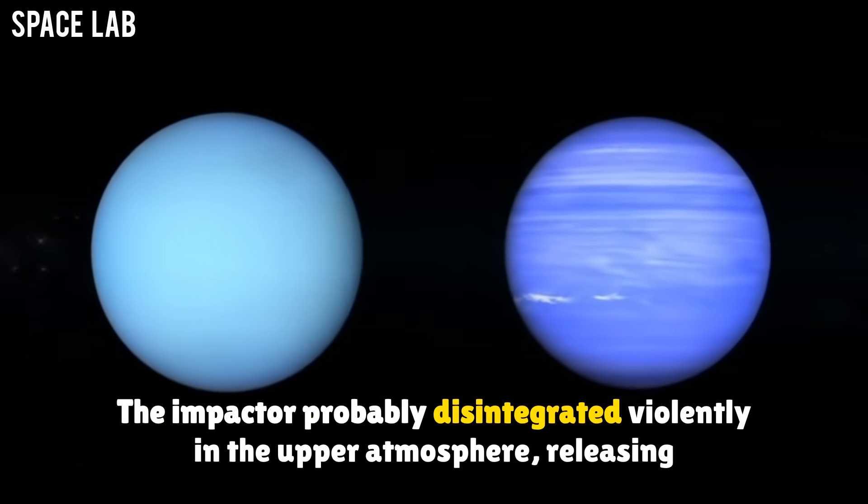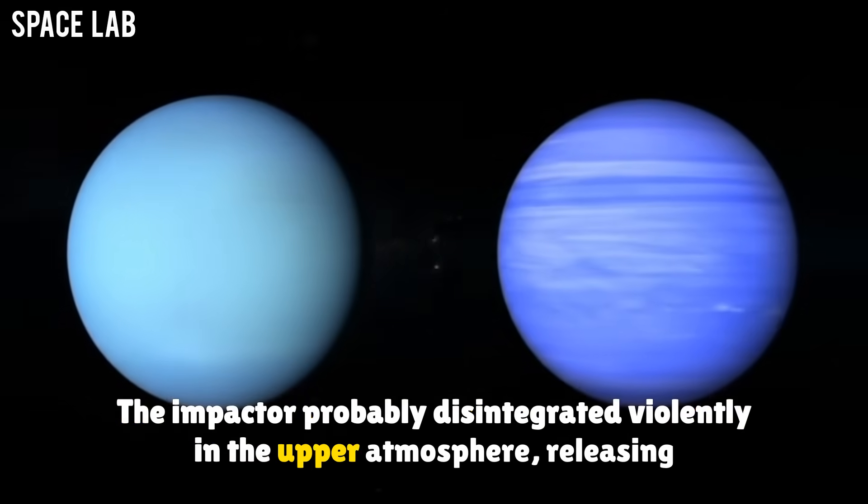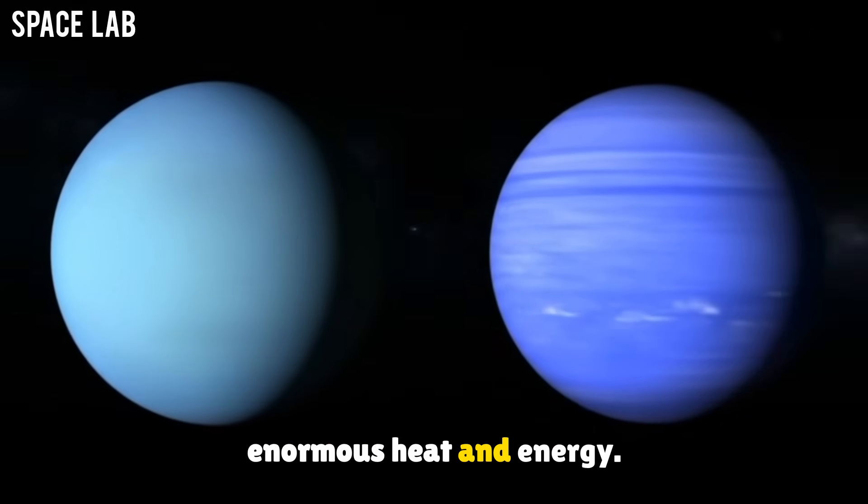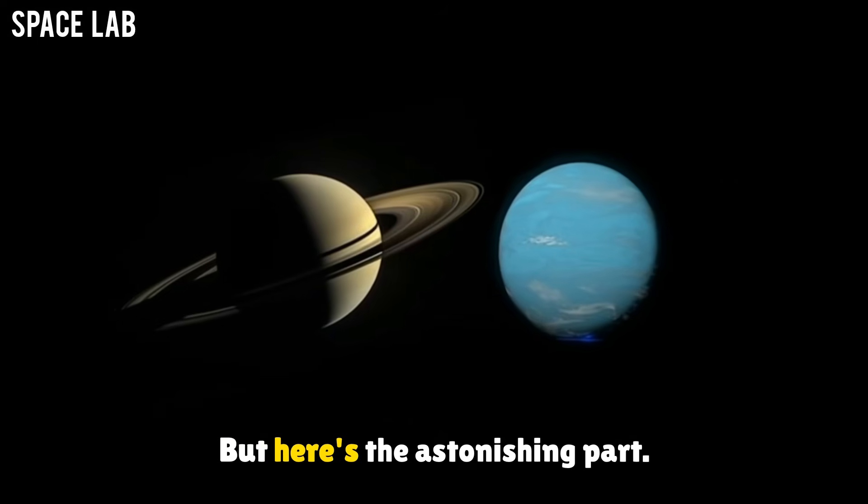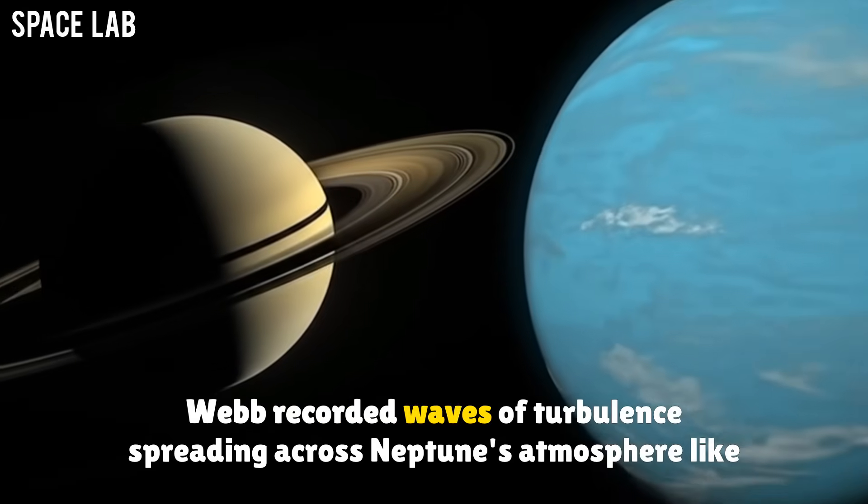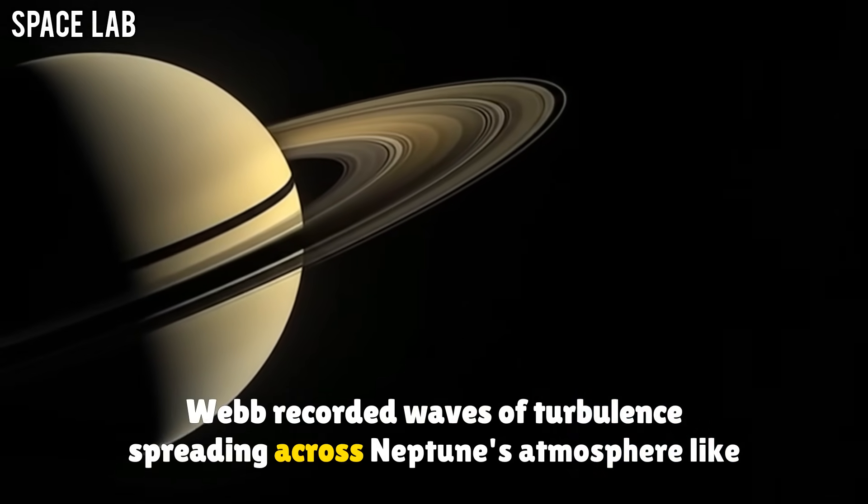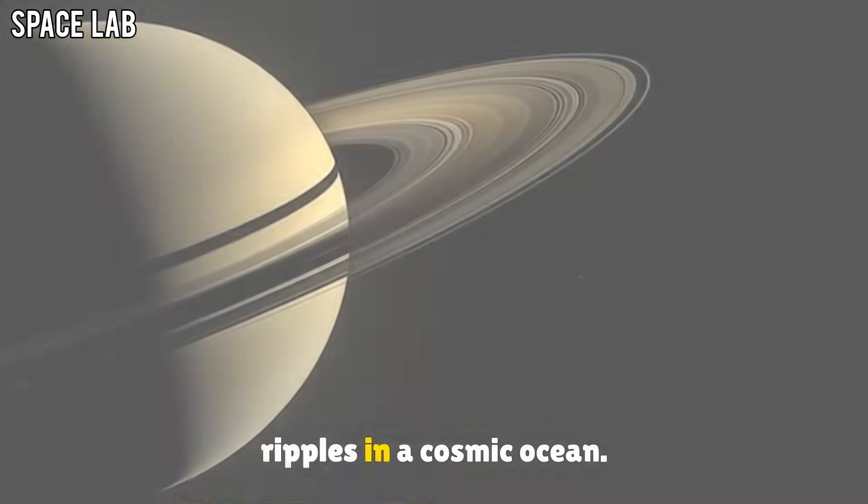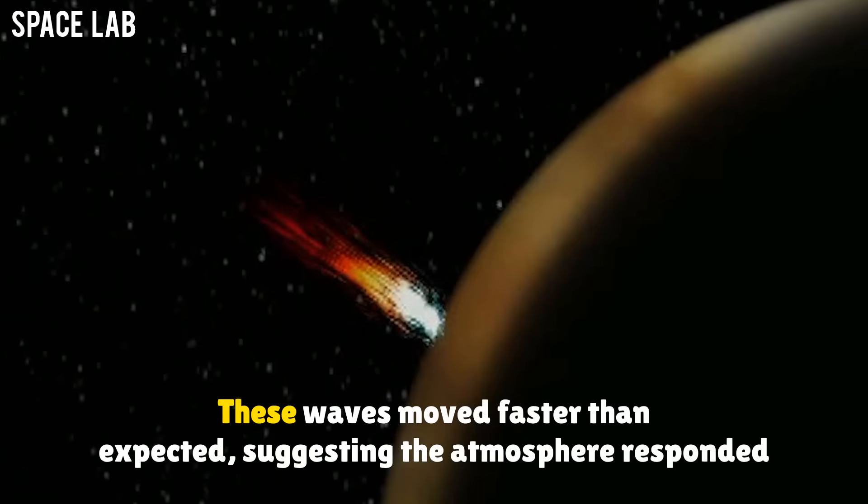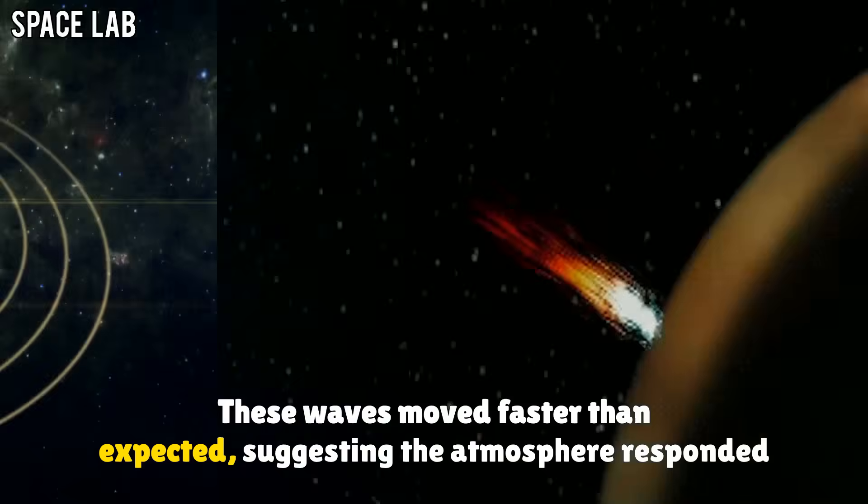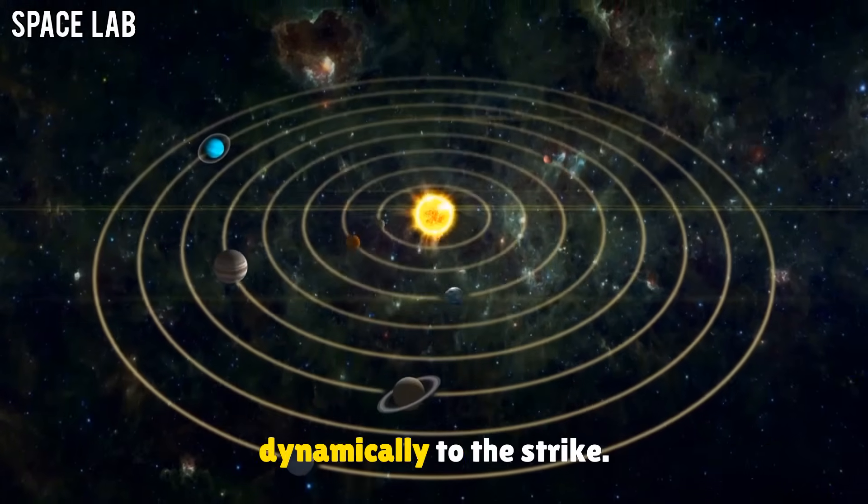The impactor probably disintegrated violently in the upper atmosphere, releasing enormous heat and energy. But here's the astonishing part. Webb recorded waves of turbulence spreading across Neptune's atmosphere like ripples in a cosmic ocean. These waves moved faster than expected, suggesting the atmosphere responded dynamically to the strike.